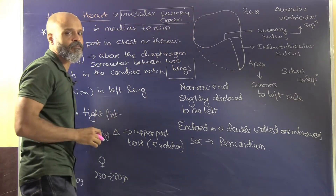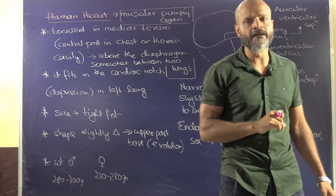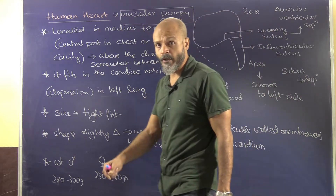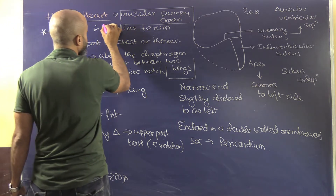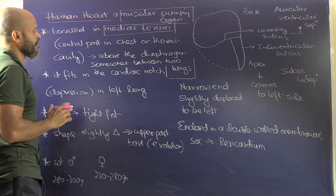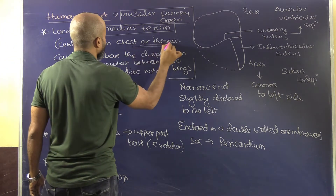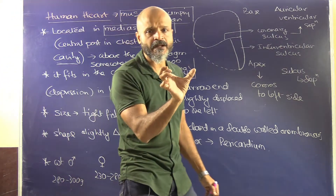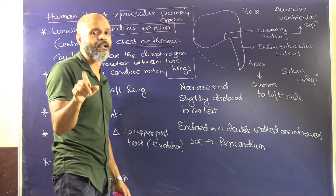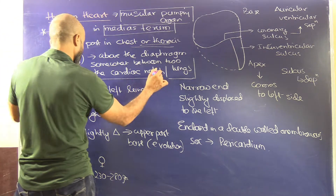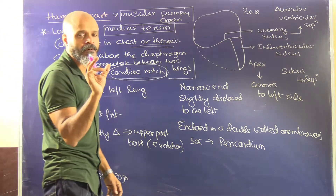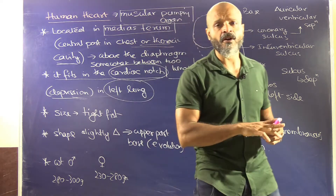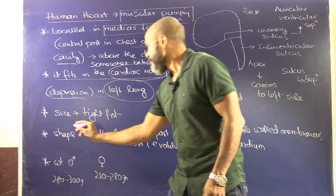The heart is a muscular pumping organ concerned with pumping both oxygenated and deoxygenated blood — deoxygenated blood needs to go into the lungs for purification and oxygenated blood goes into the body. It is located in the mediastinum, the central part of the thoracic cavity, above the diaphragm, between the two lungs. There is a depression in the left lung called the cardiac notch which accommodates the heart.